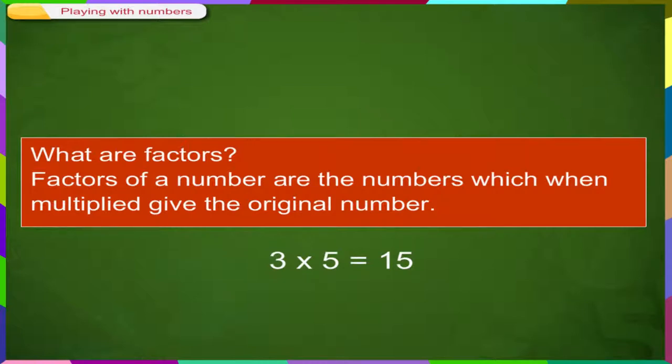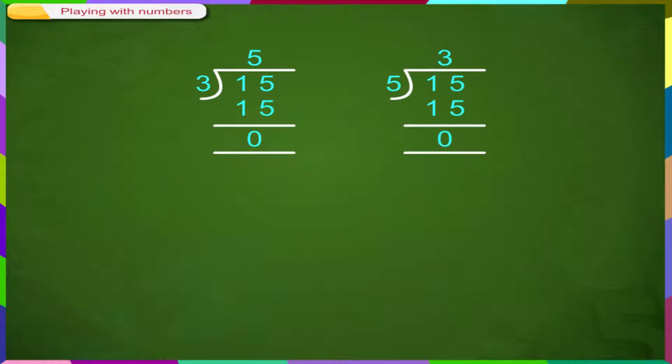Let us understand this with the help of this example. We know that the product of 3 and 5 is 15. Here, 3 and 5 are the numbers which exactly divide the number 15. We also know that 15 divided by 3 is equal to 5. 15 divided by 5 is equal to 3.